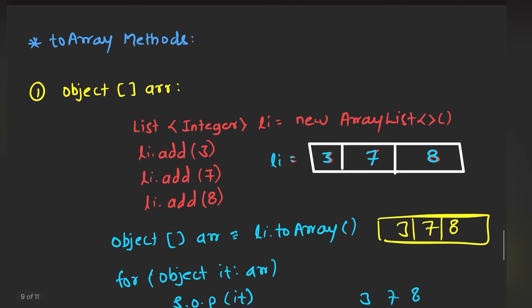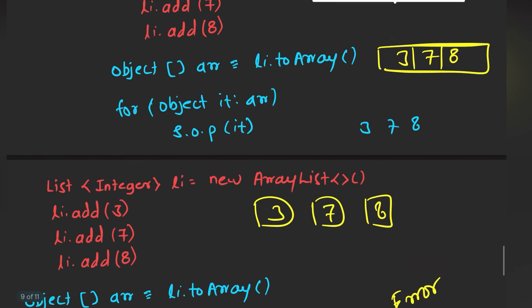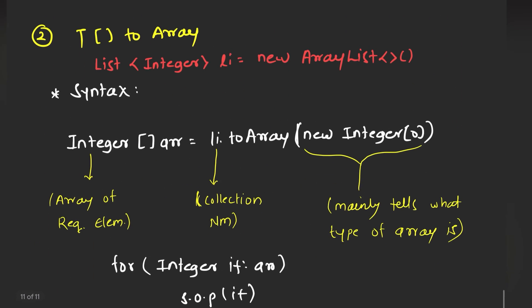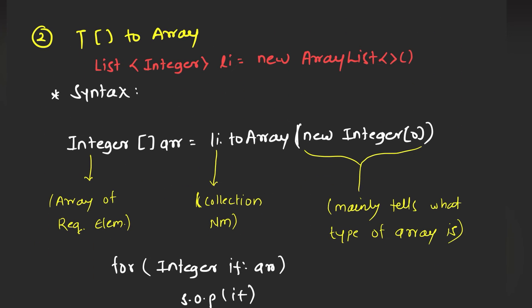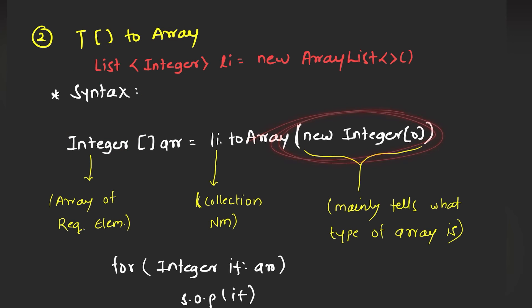Earlier with the first method, we were having a problem because it was showing an error — we could only store the list into an object array. But with this method, we can convert it into any other data type. The data type you want is specified here, this is the name of your array, li is the name of your collection, and toArray is the inbuilt function used to convert the list into the array.